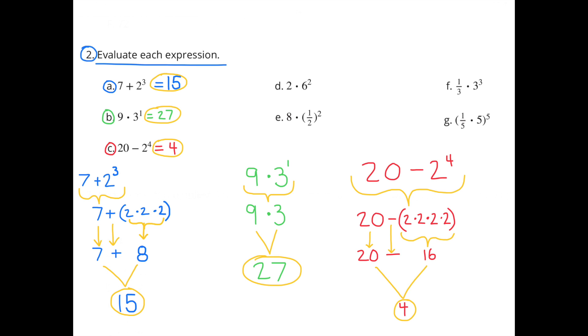B, 9 times 3 to the power of 1. 9 times 3 to the power of 1 is the same as 9 times 3, or 27.